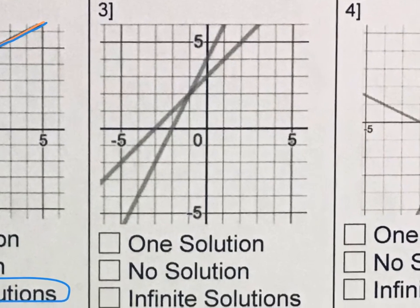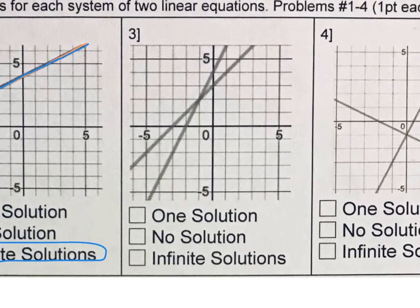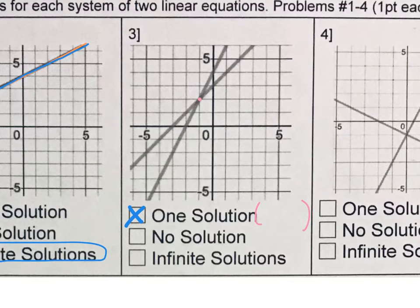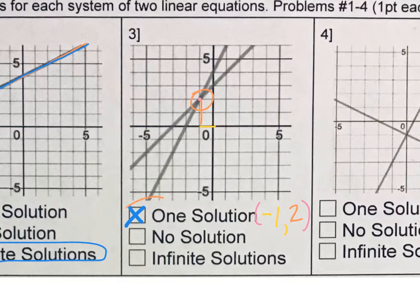For the third one, I see an X. X marks the spot — and that spot is right here, and that is an ordered pair. That means we have one solution. When we read the ordered pair, we go back 1, which is negative 1, and then it rises 2, so our ordered pair is negative 1, 2. There's one solution right there.